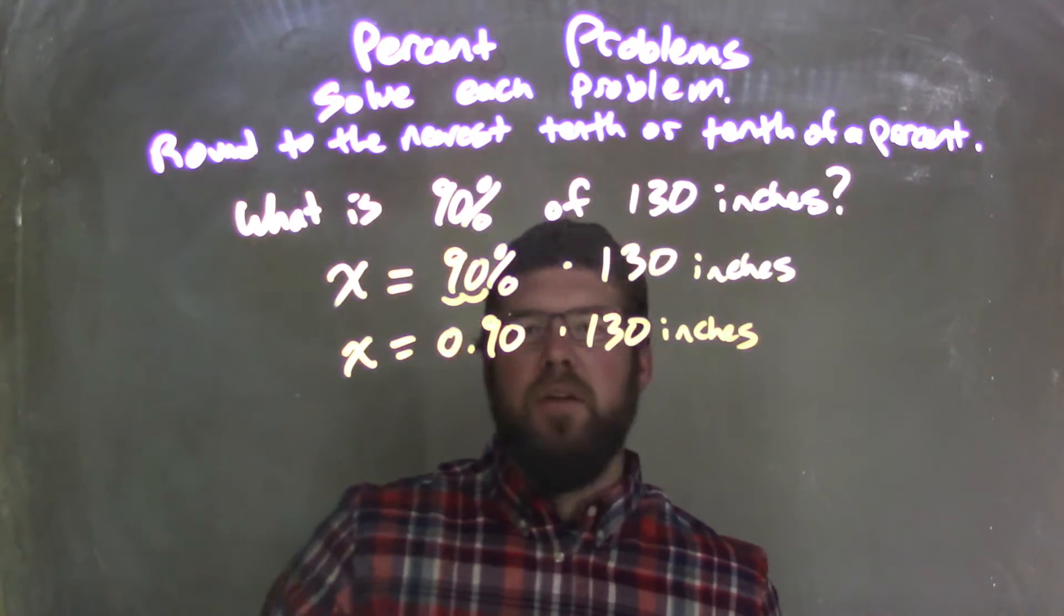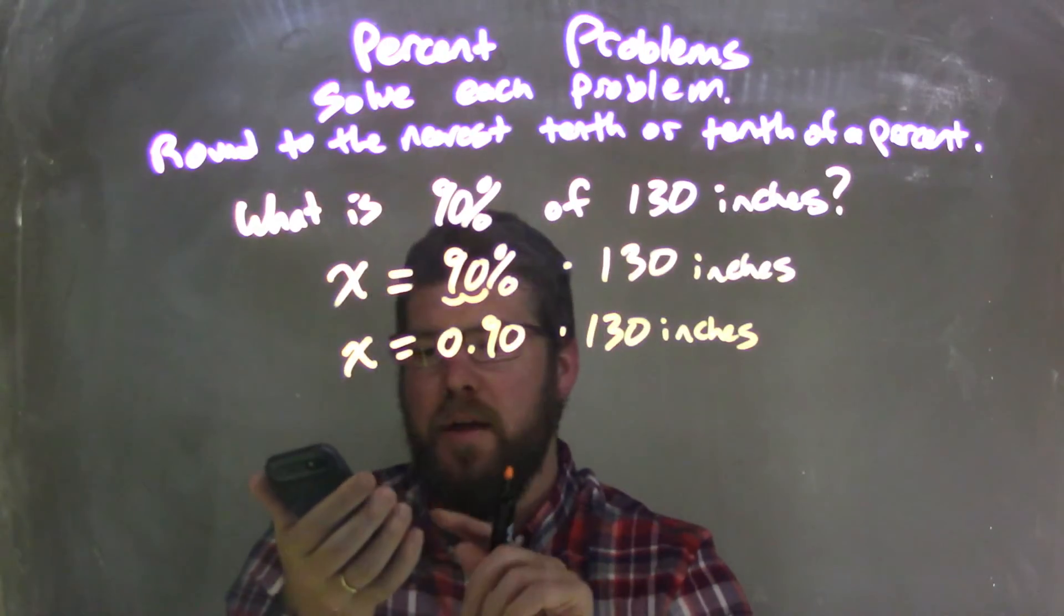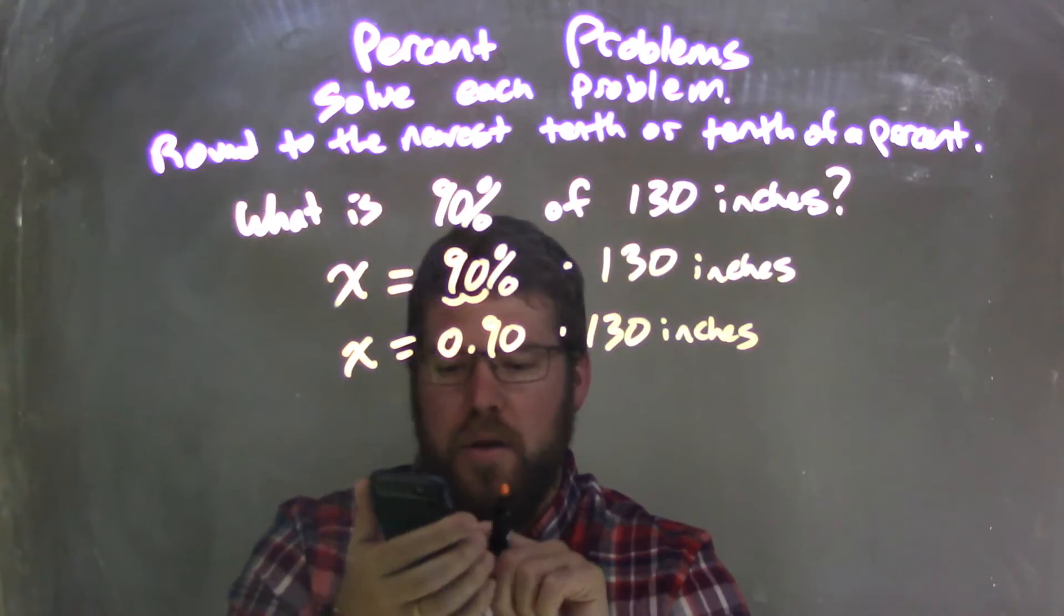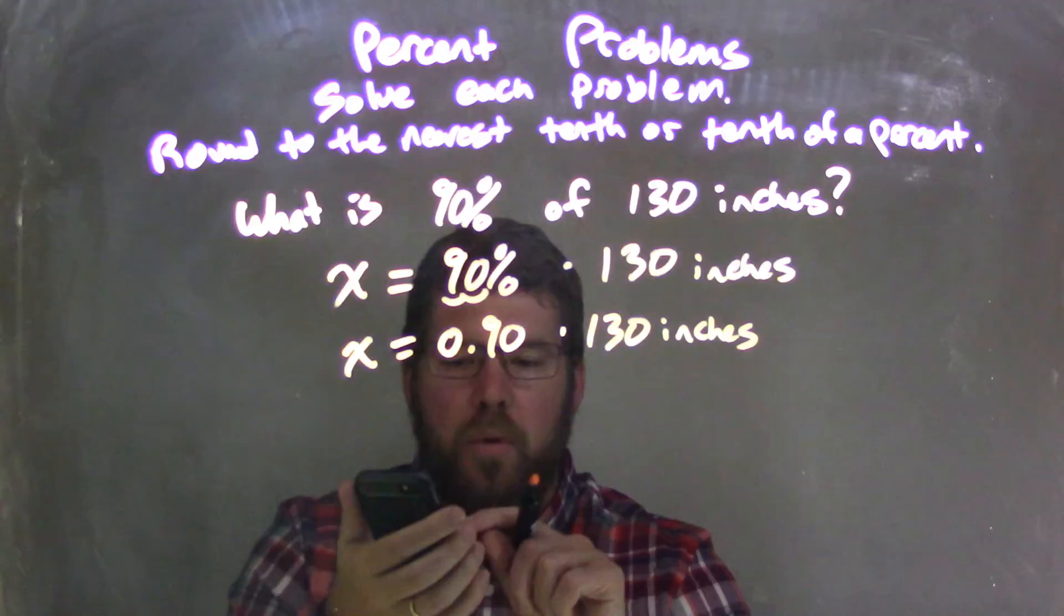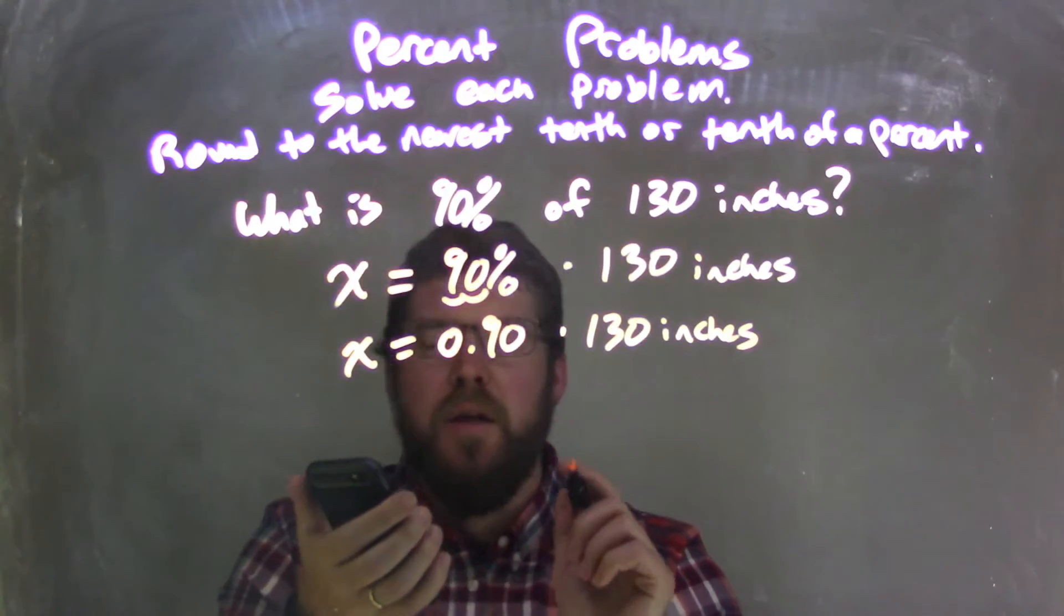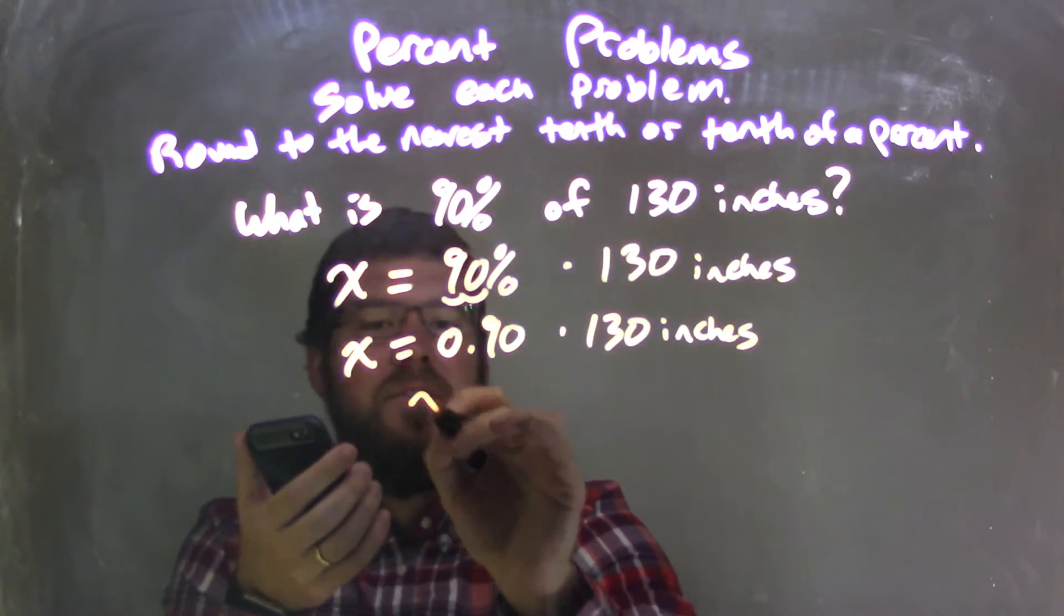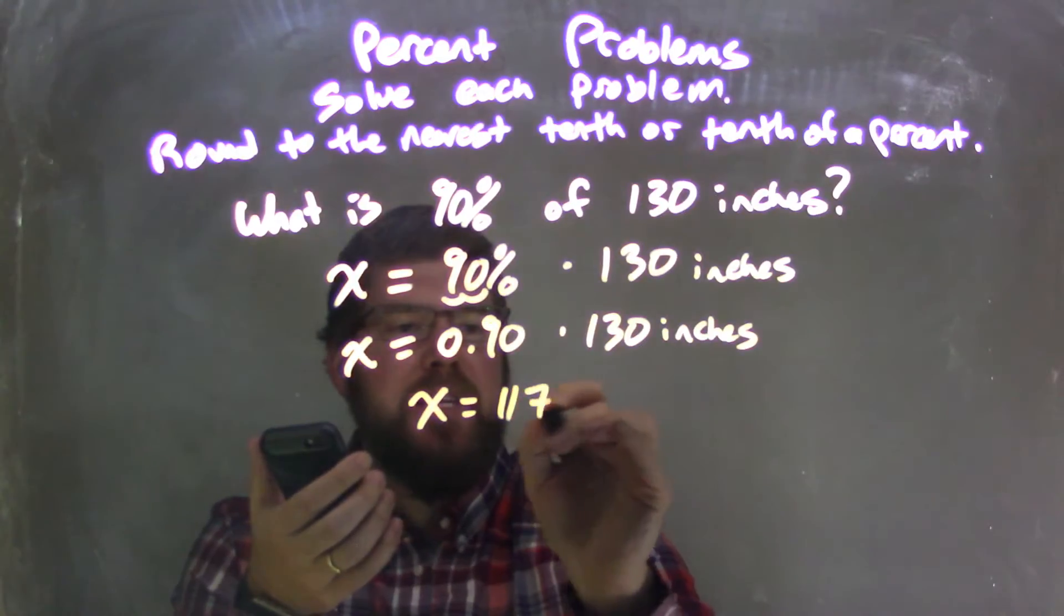So now, what is 0.90, or 0.9, times 130? That leaves me with 117. So X is equal to 117 inches.